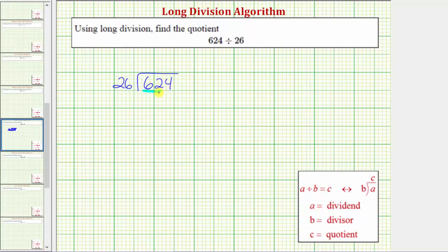We begin by determining how many 26s there are in 62. One way to approach this would be to recognize that 26 is close to 25, and if we know that 25 times 2 equals 50, and 62 is fairly close to 50, we can conclude that there are two 26s in 62. Let's place a 2 in the tens place value of the quotient.